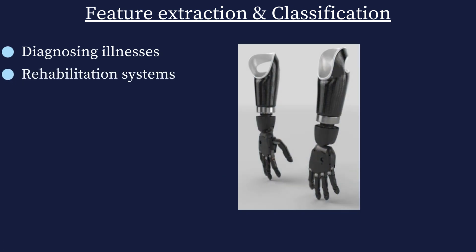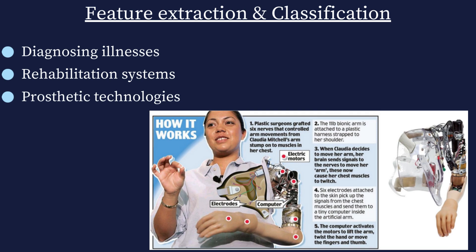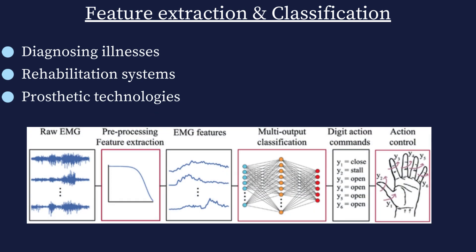Feature extraction and classification of EMG signals play a crucial role in various applications, including the diagnosis of illnesses and the control of rehabilitation systems like bionic arms. By analyzing EMG signals, valuable insights can be gained to aid in accurate identification of medical conditions and the development of advanced prosthetic technologies. This process involves extracting relevant features from EMG data to characterize muscle activity patterns, and then utilizing classification algorithms to interpret these patterns for diagnostic purposes and to enable precise control of prosthetic devices.